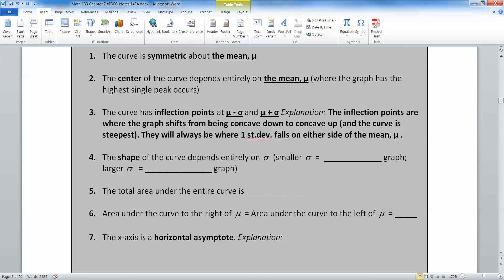Now, the shape of the curve depends entirely on sigma. Now, sigma is your standard deviation, your population standard deviation. So if you have a smaller sigma value, that gives you a narrower graph. And a larger sigma means you'll have a wider graph.